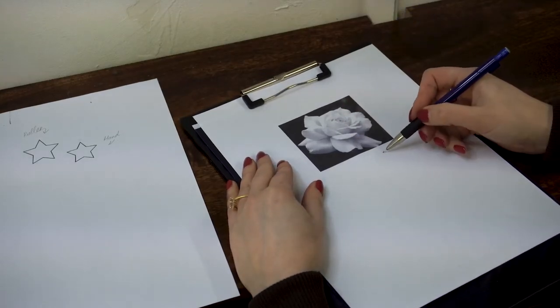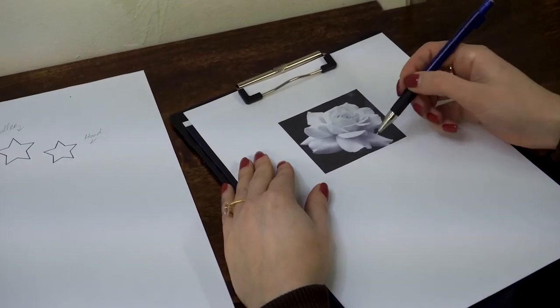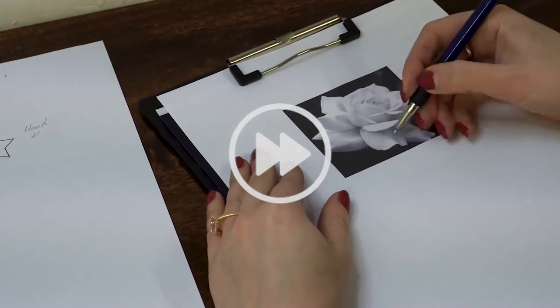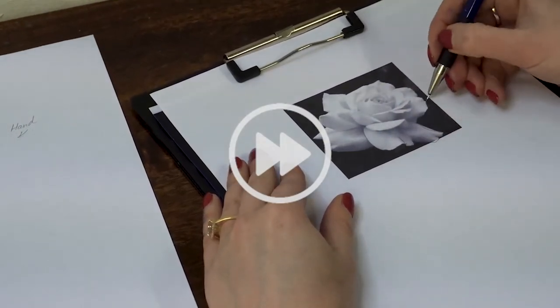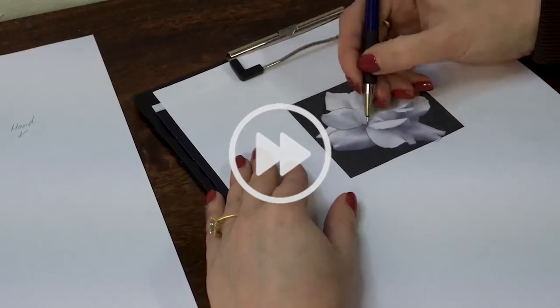I'm stenciling a rose, a much more complex design. Obviously it doesn't have any obvious lines, but you still have to outline each petal, little corners, any small detail that you will find is important.